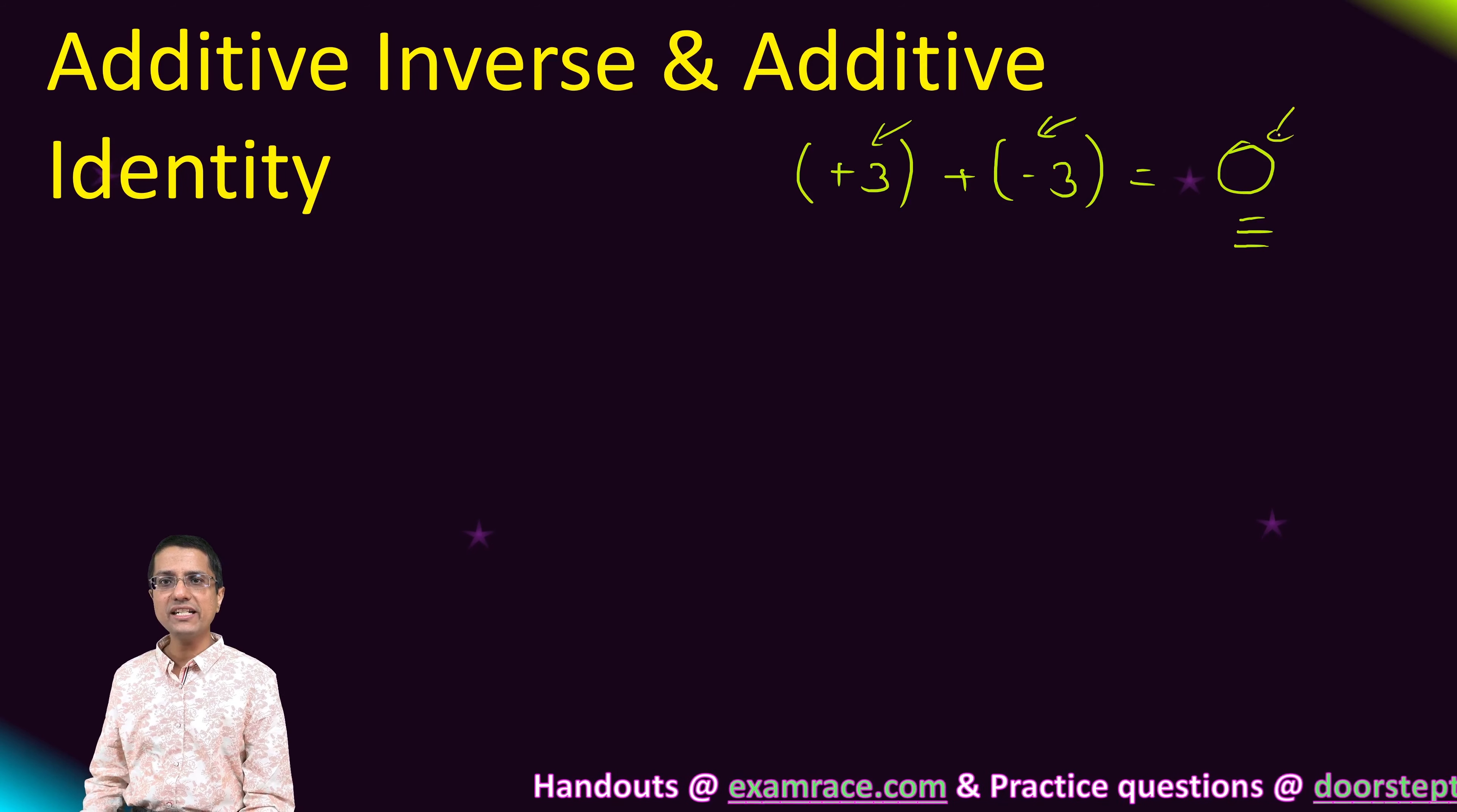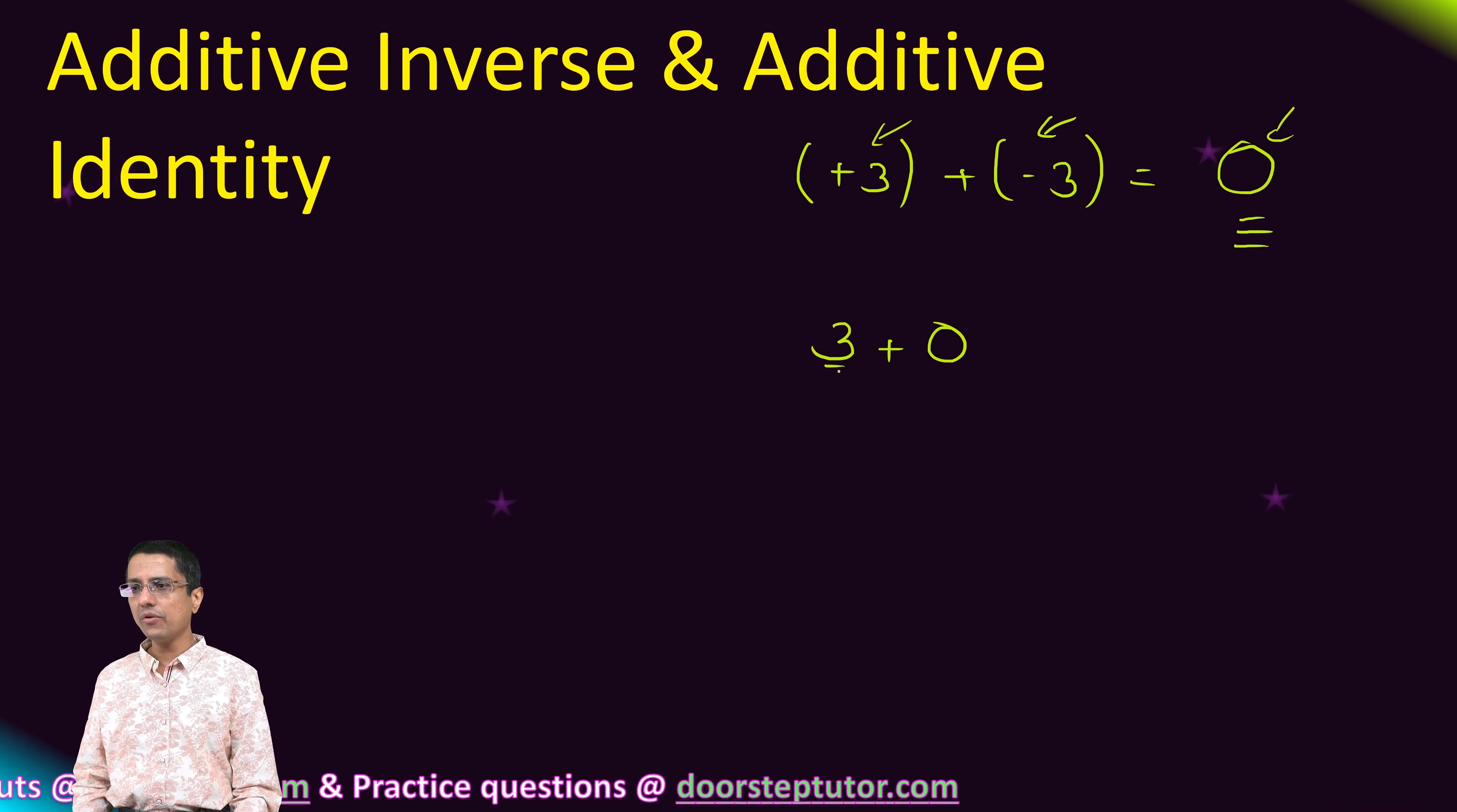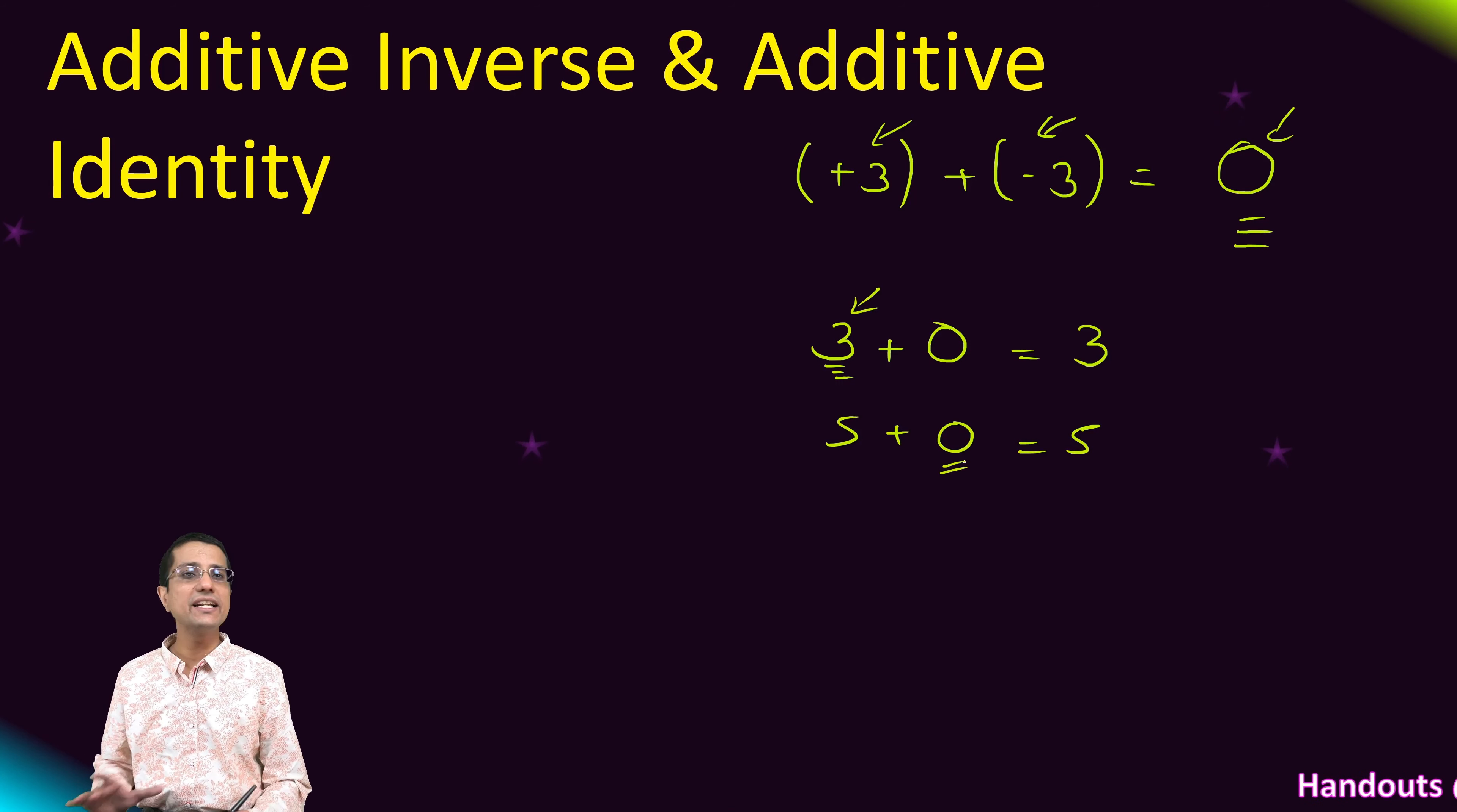And why is 0 known as additive identity? We call 0 additive identity because if I add 0 to any number, I get back the same number. So if I add, for example, 0 to 5, I get back 5. So 0 is known as additive identity.